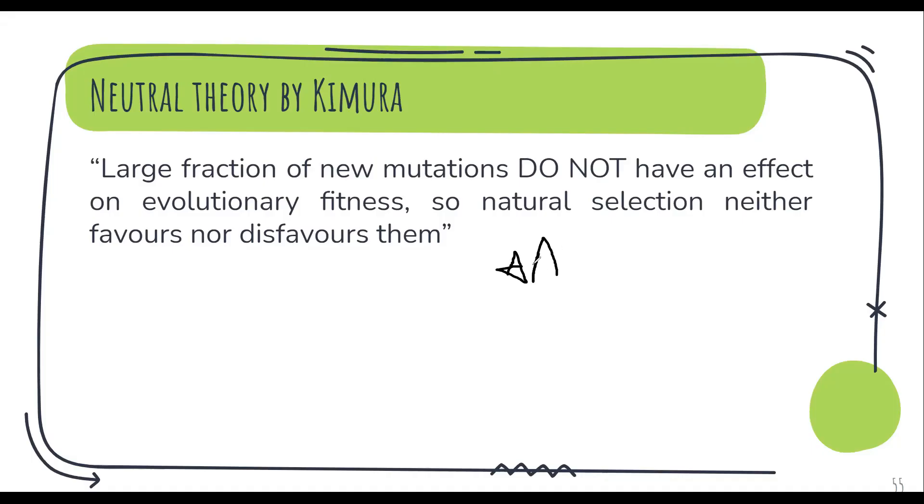Now there is a mutation. Let's say the mutation is that this A gets converted to G. Now this mutation does not cause any effect. You cannot see any phenotypic effect. So it will not affect your evolutionary fitness. So it is not providing any extra advantage. Now such mutations since they are not providing any extra advantage, natural selection does not act upon them. That is it is neither favoured nor disfavoured.